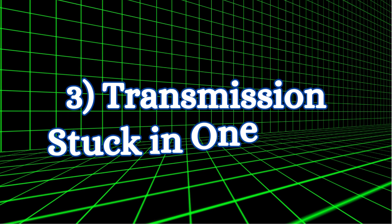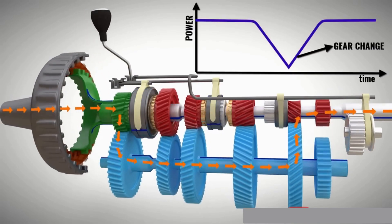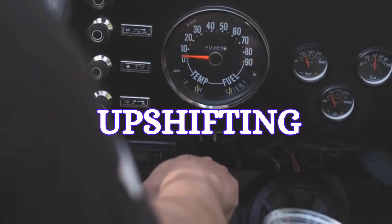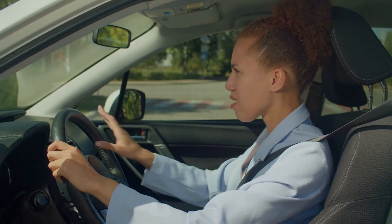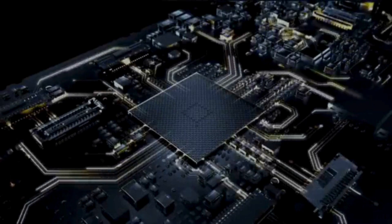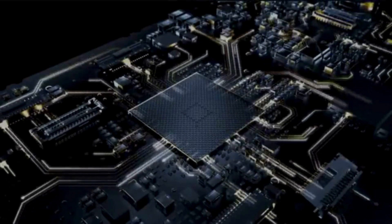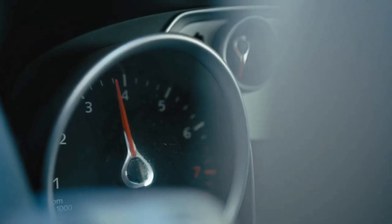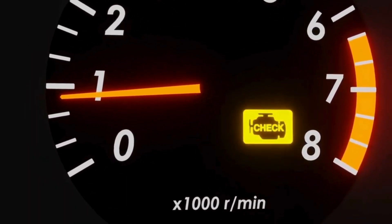Three: transmission stuck in one gear. The transmission may be locked in a single gear to prevent further strain. This prevents downshifting or upshifting, making it difficult to accelerate or decelerate normally. Four: check engine light. In case of limp mode, your car's main computer activates the check engine light or other warning lights on the dashboard. This is the engine control unit's way of signaling that a problem has been detected.